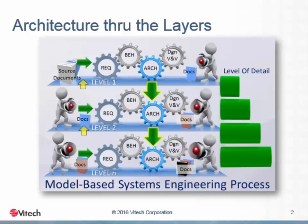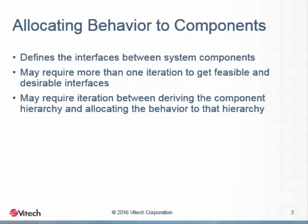We have seen how we develop an understanding of the system's requirements and identify and design the system behavior to meet those requirements. From there, we are going to design the physical architecture to implement that behavior. To accomplish this, we will allocate the system behavior to component elements within the system's physical architecture.